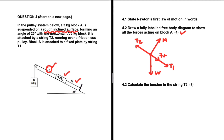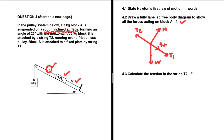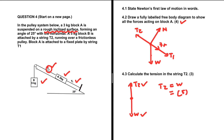Let's find T2 using the 5 kg block. For the 5 kg block, we have weight acting downward and T2 pulling it upward. Since the system is at equilibrium, weight equals T2. Therefore, T2 equals the weight of the 5 kg block: 5 multiplied by 9.8, which equals 49 newtons.